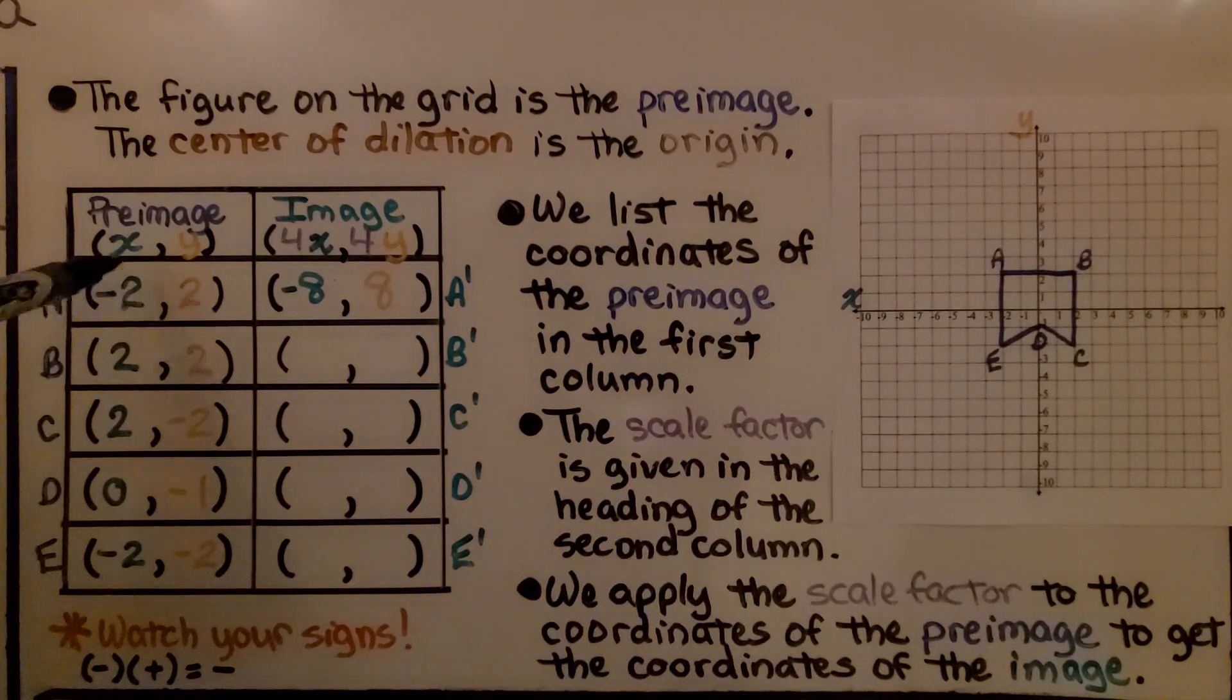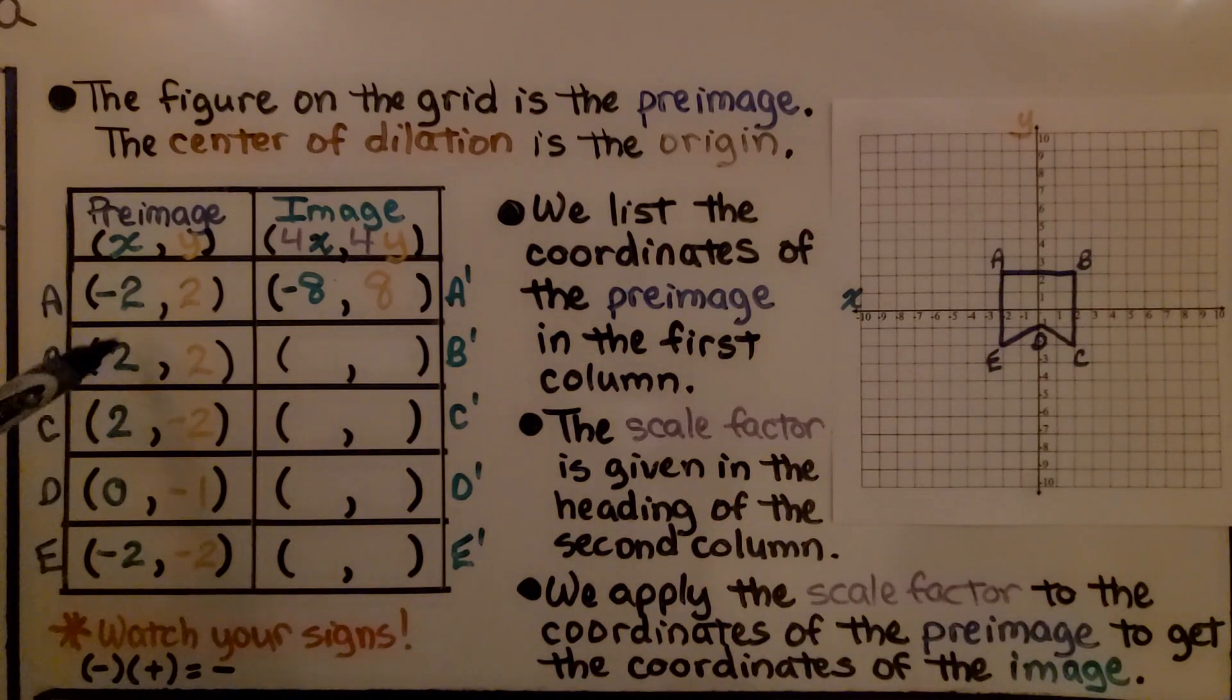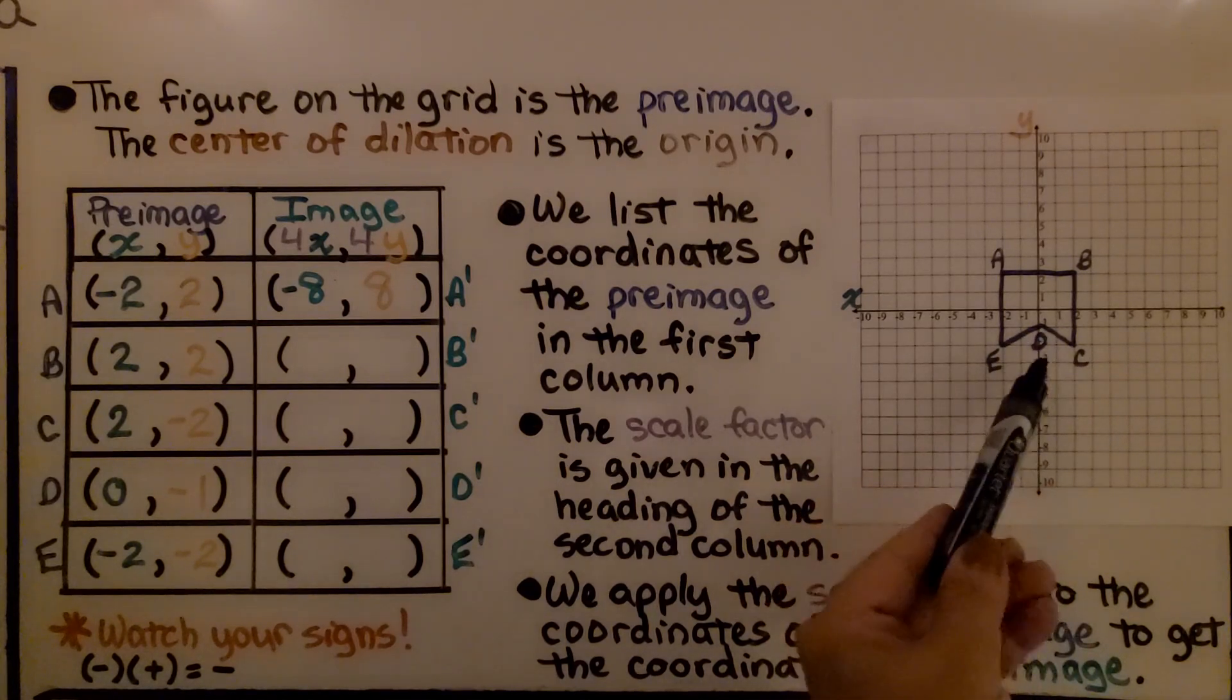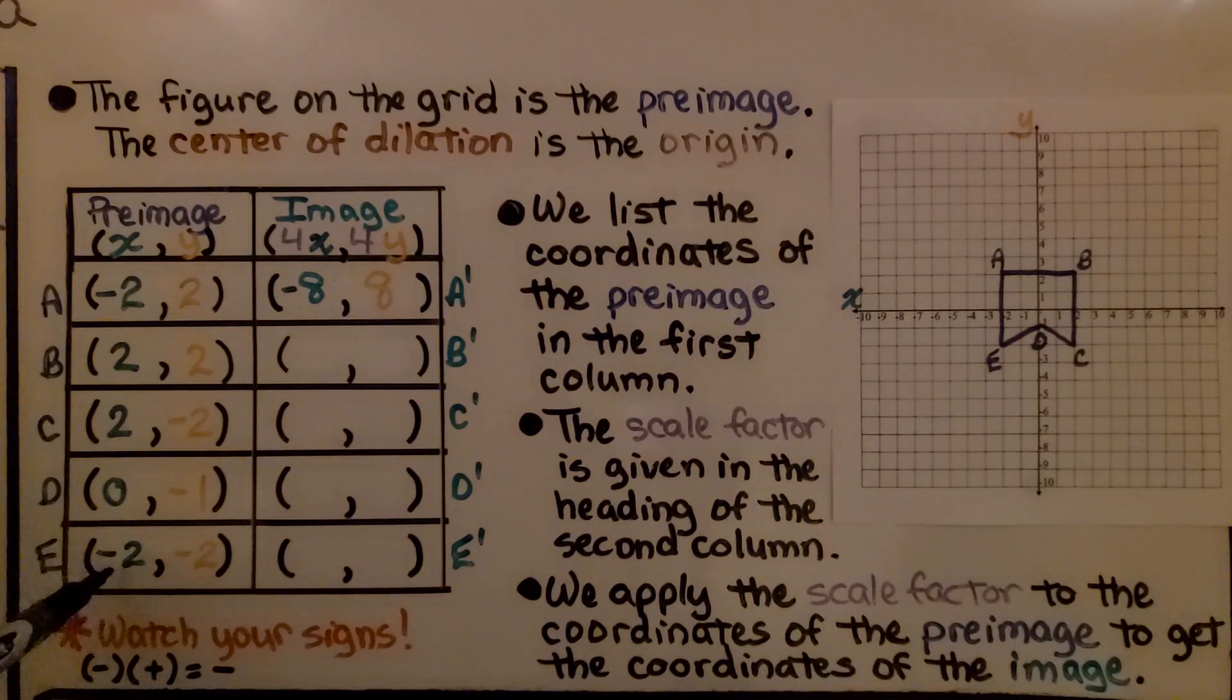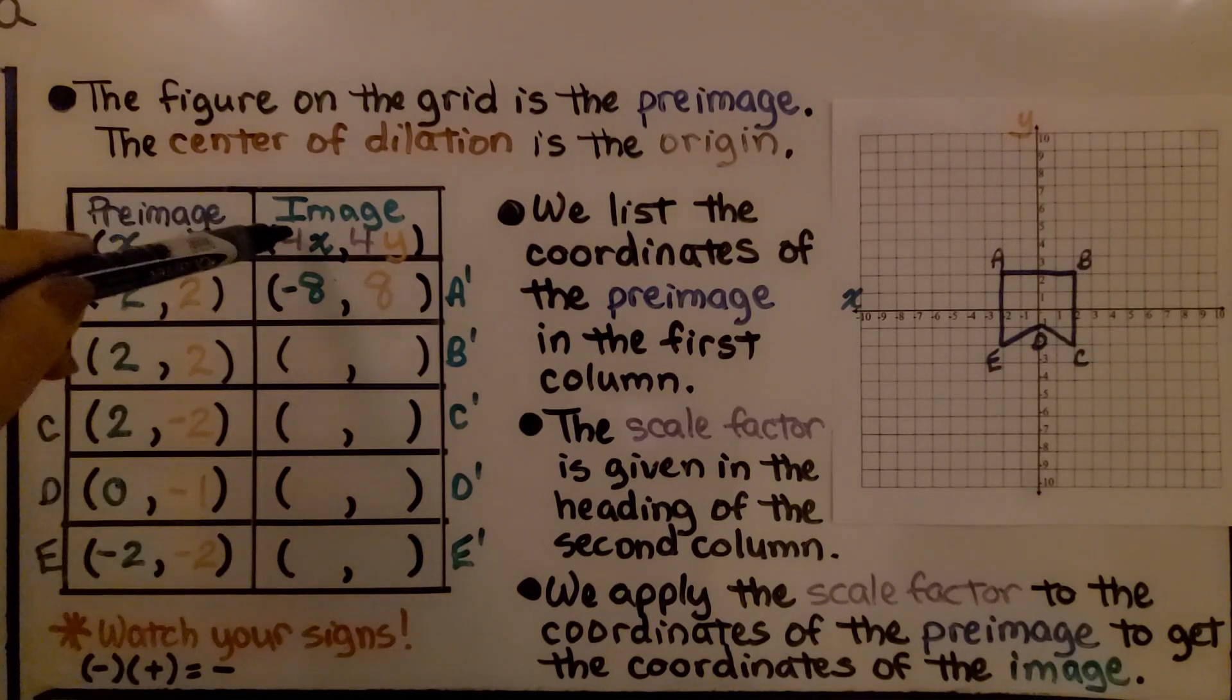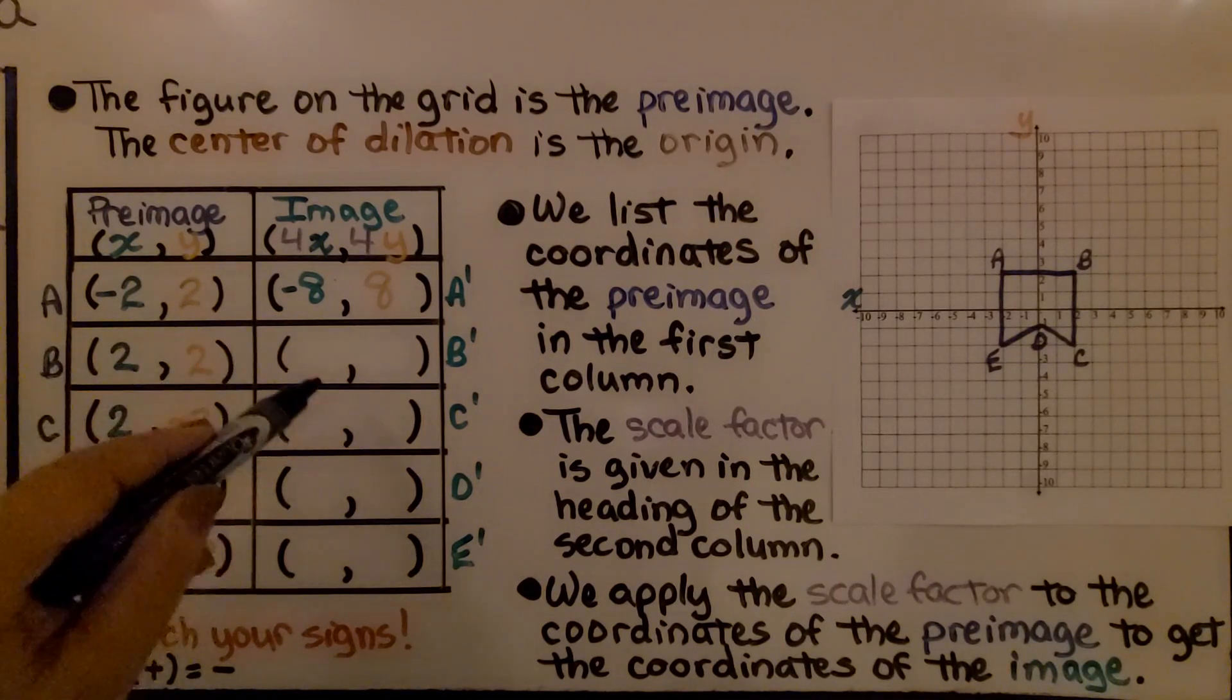So A is at negative 2, 2. B is at 2, 2. C is at 2, negative 2. D is at 0, negative 1. And E is at negative 2, negative 2. And the scale factor is given in the heading of this second column. We know it's 4. We apply the scale factor to the coordinates of the preimage to get the coordinates of the image.